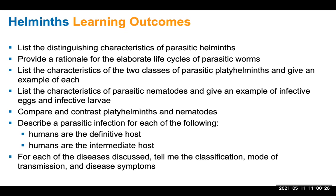For the helminths, we'll list the distinguishing characteristics of parasitic helminths, provide a rationale for the elaborate life cycles of parasitic worms, list the characteristics of the two classes of parasitic platyhelminths and give an example of each, list the characteristics of parasitic nematodes, and give examples of infective eggs and infective larvae, and compare and contrast platyhelminths and nematodes. We'll also describe parasitic infections for humans as the definitive host, humans as the intermediate host.